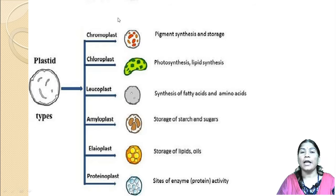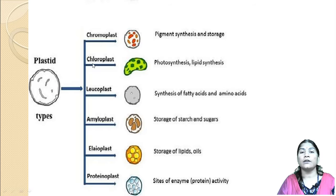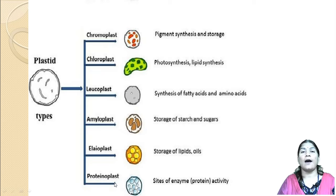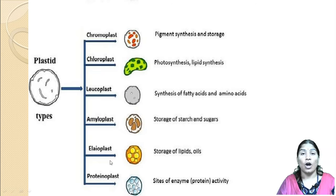These schematic diagrams show the different types of plastids: chromoplast, chloroplast, leukoplast, amyloplast, elaioplast, and proteinoplast. These are the major types of plastids. On the basis of which pigment is present, or whether pigments are absent, they are classified into their different types.